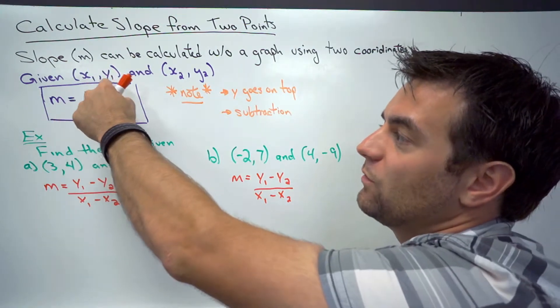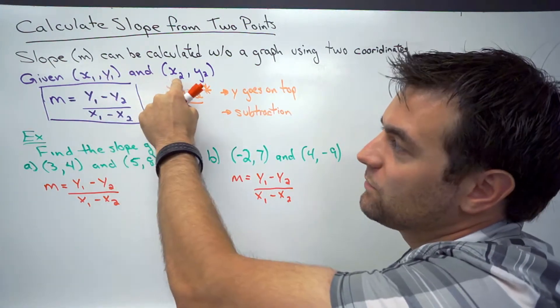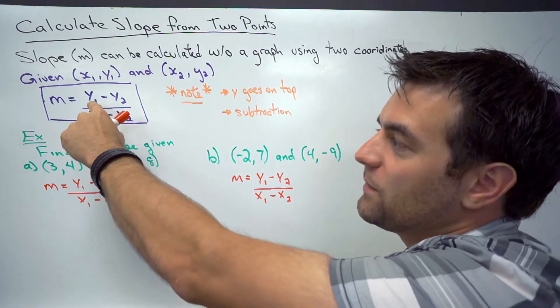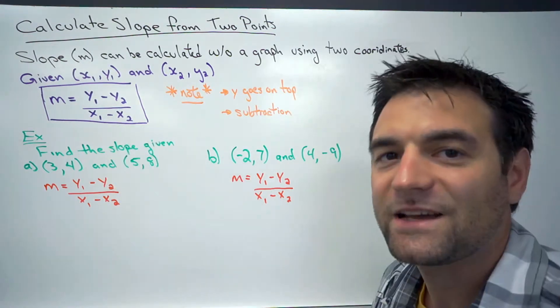So in general, we're given one point which we'll call x1, y1, and another point x2, y2. And we plug those into this formula: y1 minus y2 over x1 minus x2.